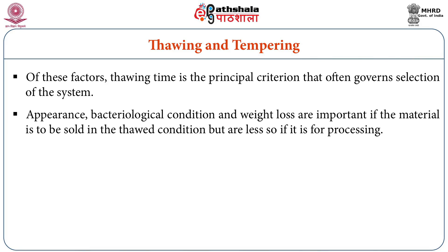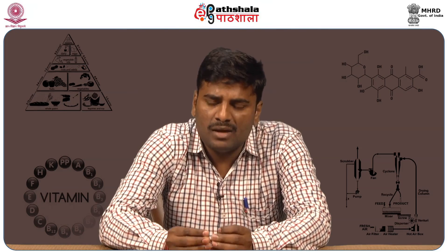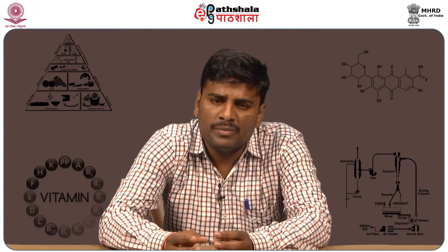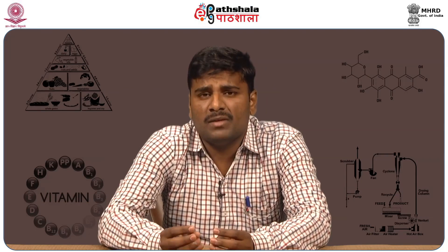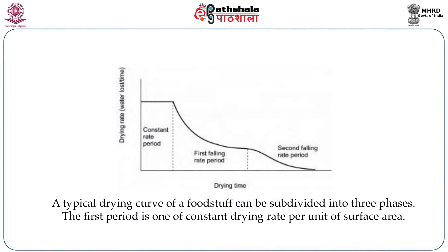Appearance, bacteriological condition, and weight loss are important if the material is to be sold in the thawed condition, but less important if it is for further processing. During thawing, we may lose water and some nutrients — a 1 kg piece of meat may become 900 grams. This is a sellable weight loss for the seller, so we should consider this point because excess thawing also causes loss of sellable weight. You can see this microwave heating system in the picture.